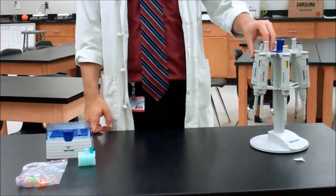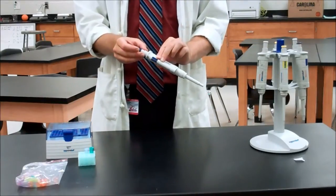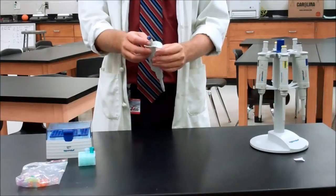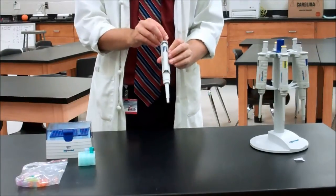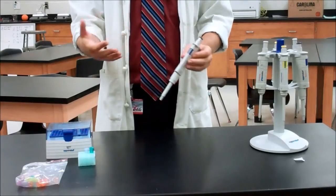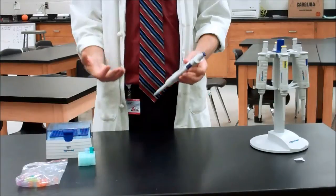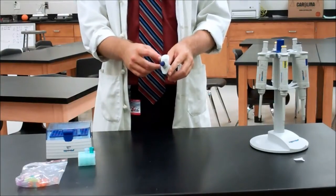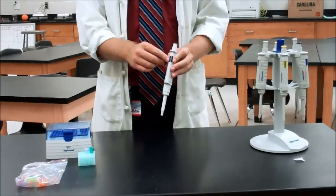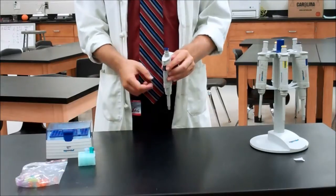The first thing to be aware of is whether your pipetters are adjustable volume or set volumes. If they're adjustable volumes, be very careful that you check the volume ranges on top because moving the set dials outside their range will break all the gears inside and will ruin your equipment which can be very costly for your school. So pay close attention to the required range for your micro-pipetters that you're using and make sure that the range that you set it for doesn't exceed the range that's prescribed.